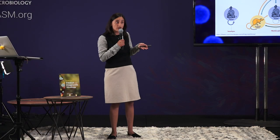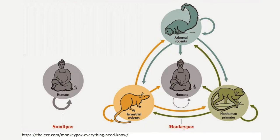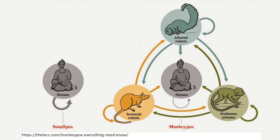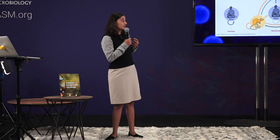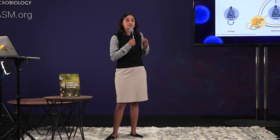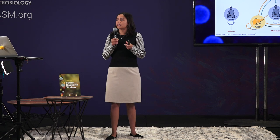Now, another really big difference between monkeypox and smallpox is how they are acquired. Monkeypox can be acquired from other humans, but is generally acquired from animals. We know that it can affect monkeys — that's how it got its name — and it can also infect rodents and other small animals. This animal reservoir is really significant because it makes the virus very difficult to eradicate. That's different from smallpox, which can infect only one host: humans.